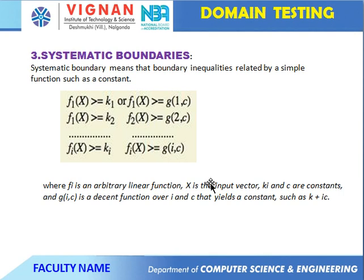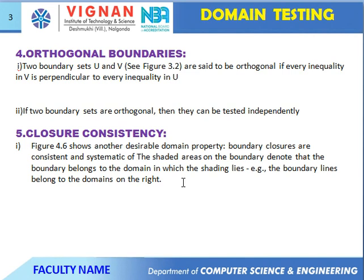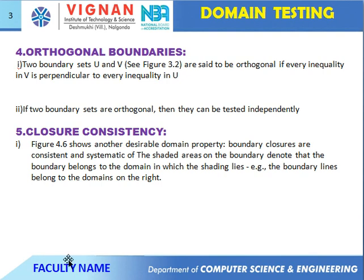Next, systematic boundaries. Systematic boundaries means that boundary equalities are related by simple functions such as constraints. These are the fundamental predicates implemented in systematic boundaries: boundaries F of X greater than or equal to K1, etc. Next, orthogonal boundaries. Two boundary sets U and V are said to be orthogonal if every inequality in V is perpendicular to every inequality in U. These are the boundaries and closure consistency.